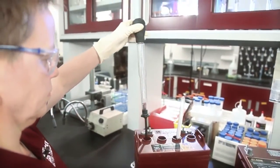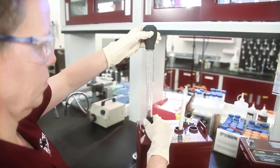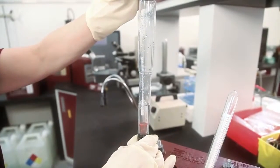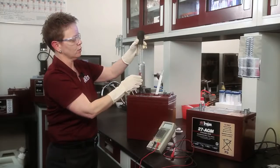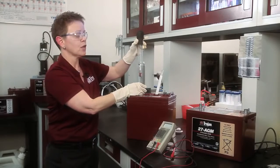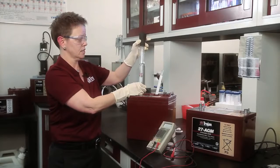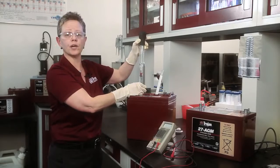Take the hydrometer and insert it into the cell of the battery and siphon out the electrolyte. You want to make sure that the float that's inside of the hydrometer floats freely and is not stuck to the side like this, as it can give you an errant reading.